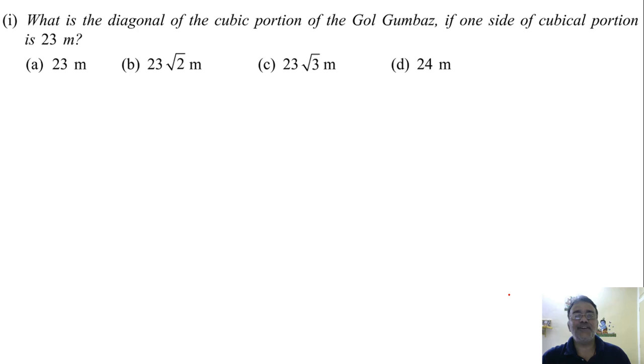What is the diagonal of the cubic portion of the Gol Gumbas if one side of cubical portion is 23 meter? What is the formula for finding the diagonal of a cube? a root 3. Fine. Very good. So what is the correct answer here? Option C. Right. Option C. Correct.